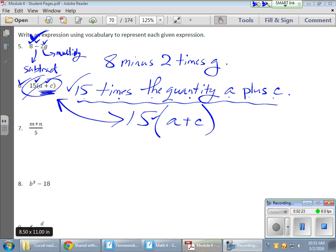This guy here, I'd probably use the quantity again just to make sure these guys go together because they're sitting up top as a numerator. So I would write something like the quantity of m plus n divided by five.